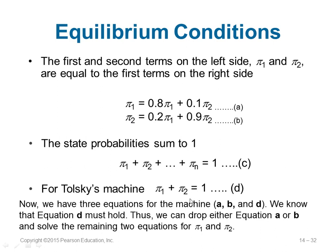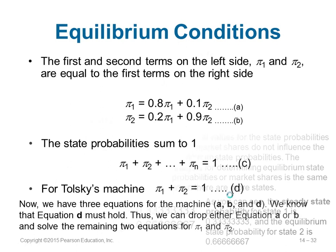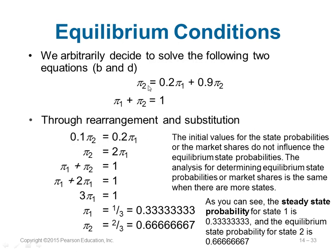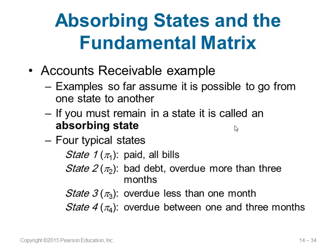The first two equations and the third one, pi 1 plus pi 2 equals 1, let you solve by substitution. You can replace pi 2 in terms of pi 1 and calculate the steady state values of pi 1 and pi 2. After that value is reached, it will not change — the system maintains its steady state probability.